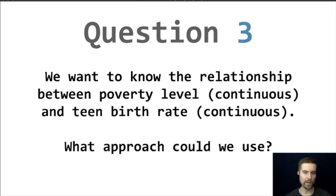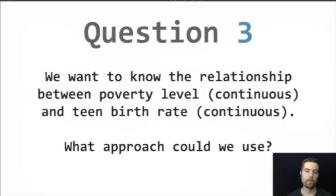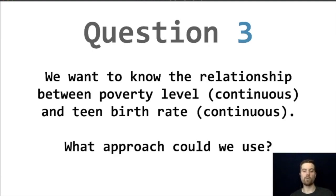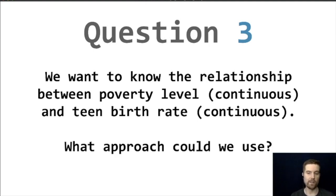Question three: we want to know the relationship between poverty level — a continuous variable — and teen birth rate, also continuous. Notice I was careful with the wording: I didn't say one caused the other or one was the outcome. When we just say 'the relationship' without hypothesizing which is the outcome and which is the predictor, we generally go with correlation. Regression works as well, but because we don't specify an outcome, correlation is probably a slightly better response.